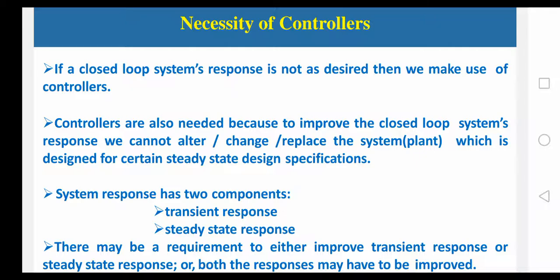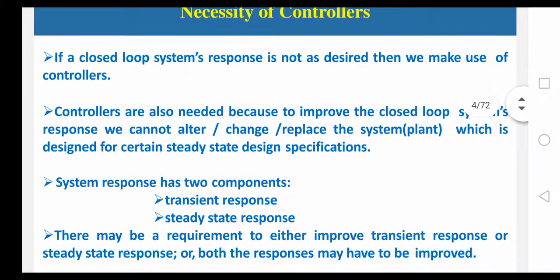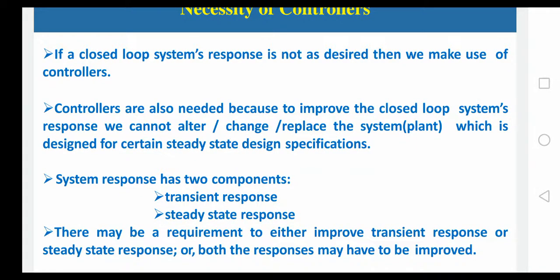Whenever you are designing a control system, we are having two types: open loop and closed loop control system. When you are using an open loop control system, it is more stable but it is not accurate. But coming to a closed loop control system, it is less stable but more accurate. More accurate means we are getting a desired output, so that we are going to use feedback, even though if it is less stable.